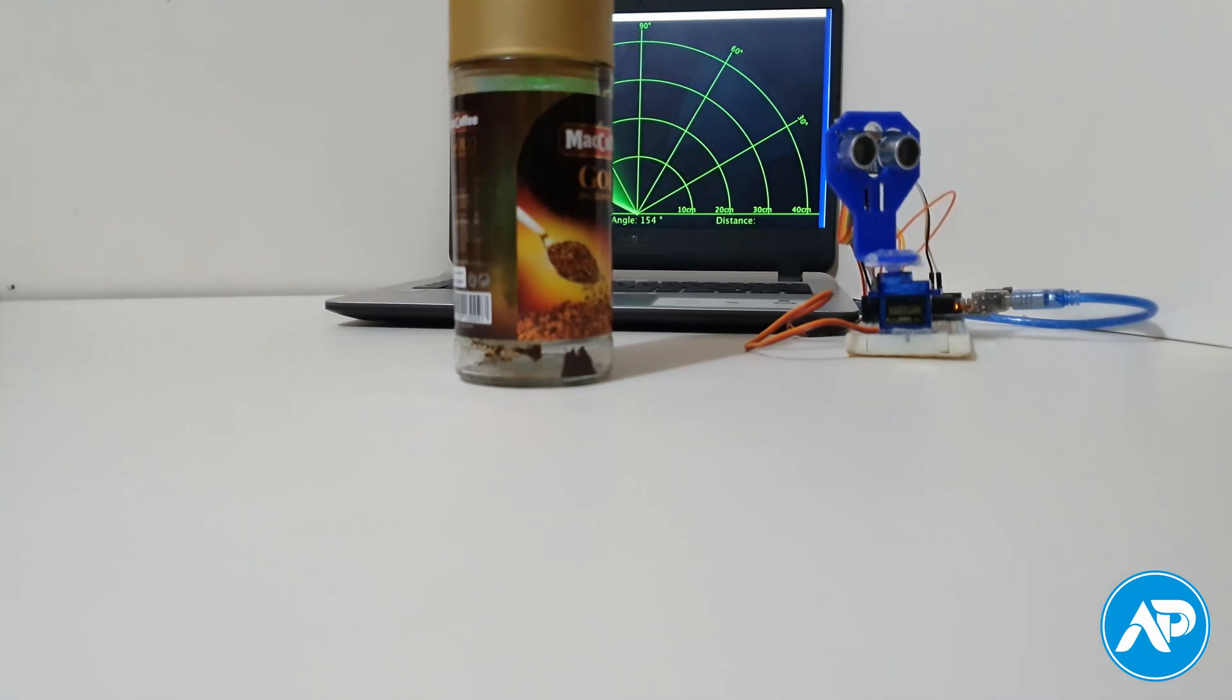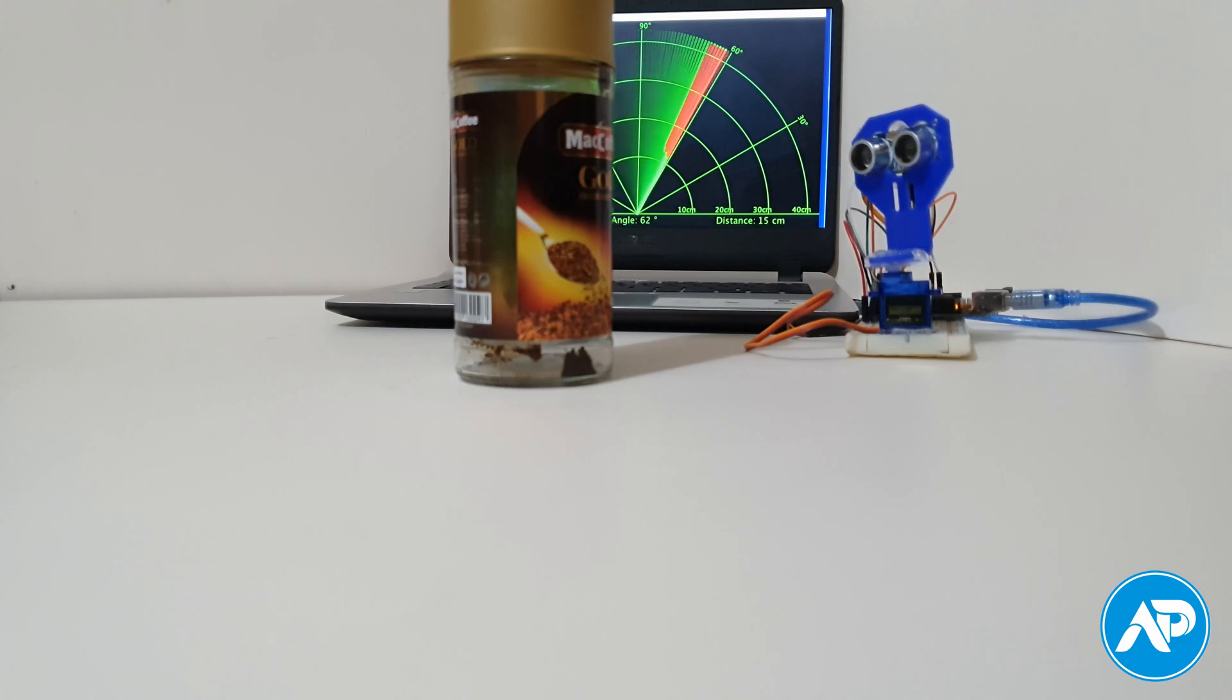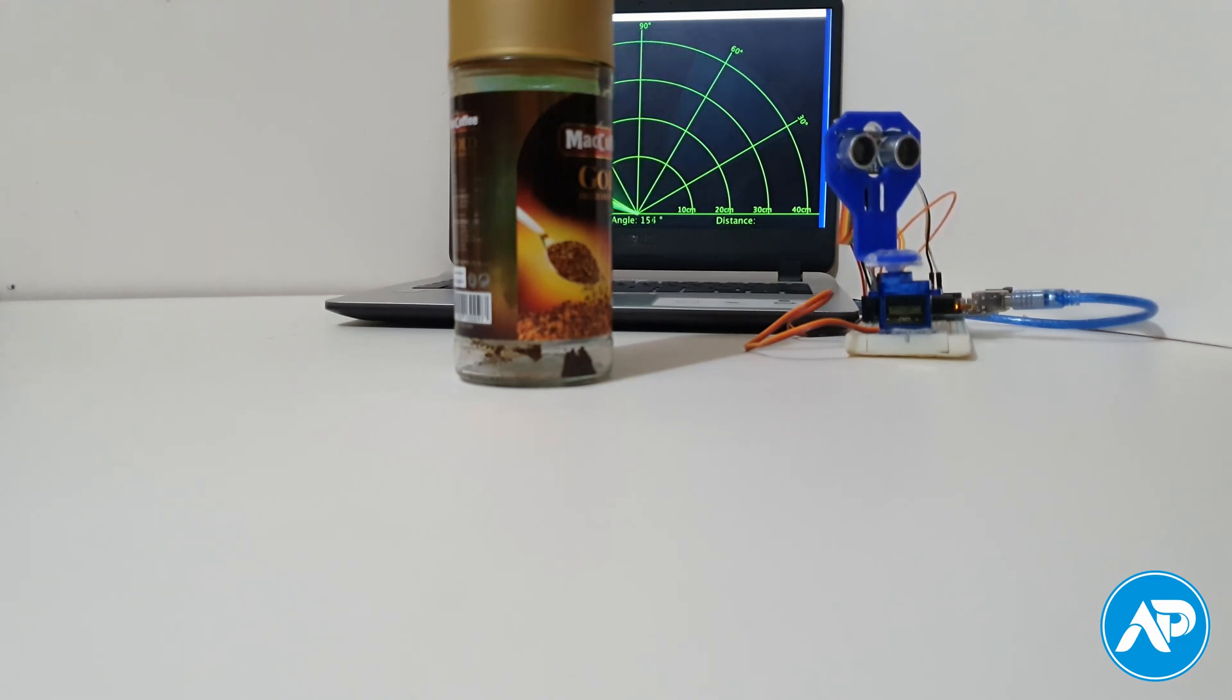Change the object location and see how the radar performs. Here we can detect the distance and angle of any object within 40 centimeters and 15 degrees to 165 degrees.